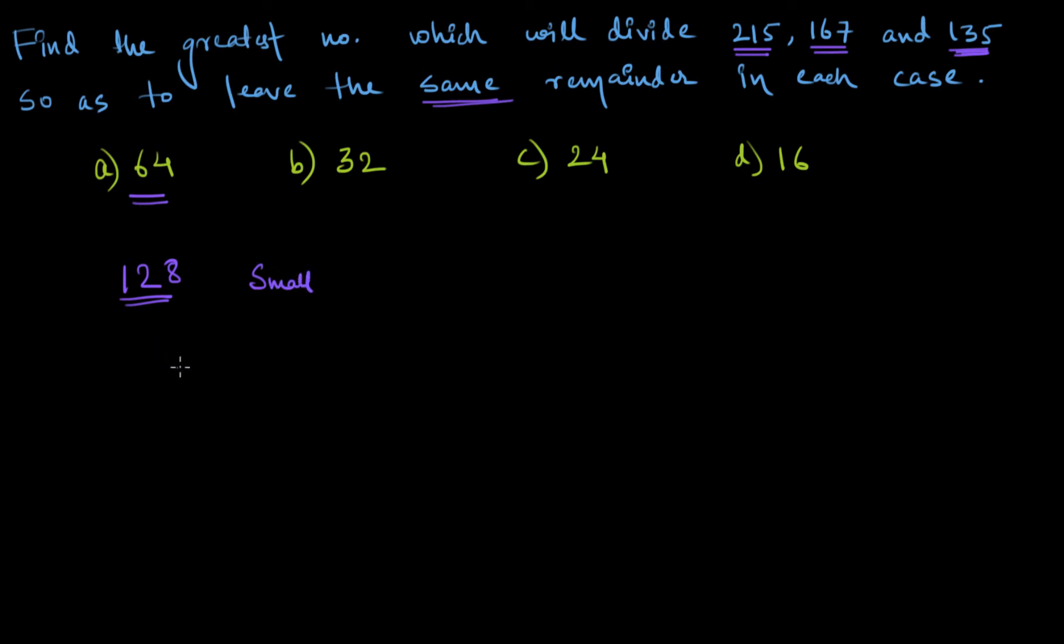But 64×3 will be equal to 4×3=12, 1 carry, 6×3=18, so 192. Now 192 is greater than 167. So if I divide 167 by 64, I'll get a bigger remainder, and I have to still take 2 as a quotient.